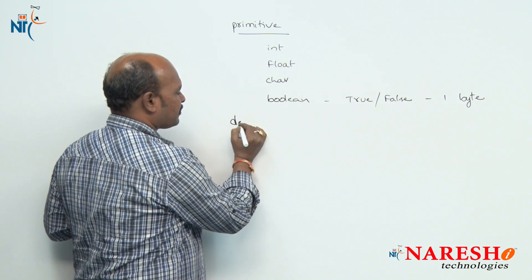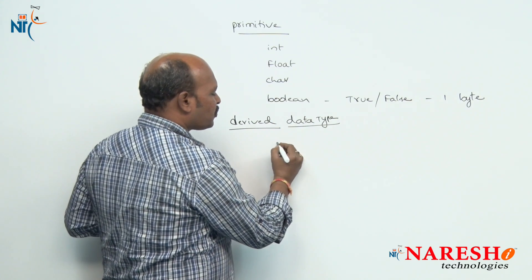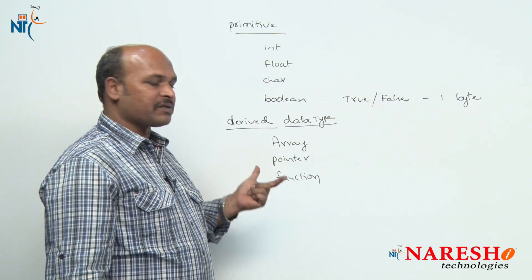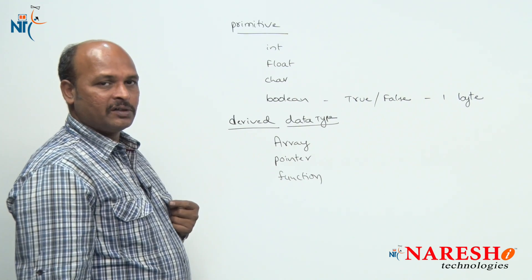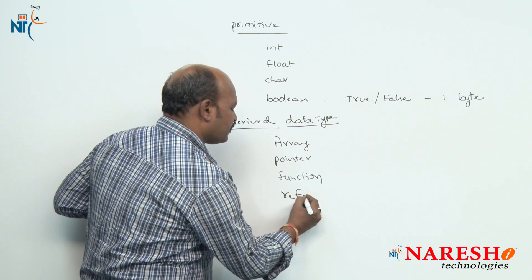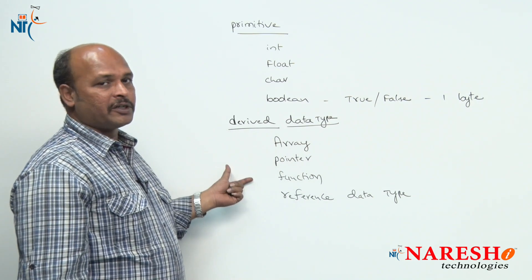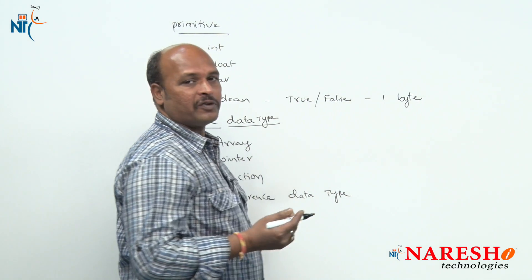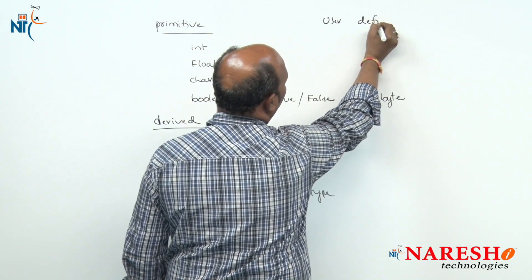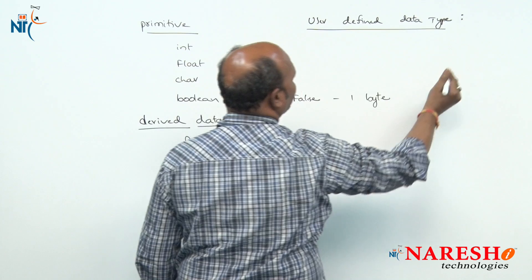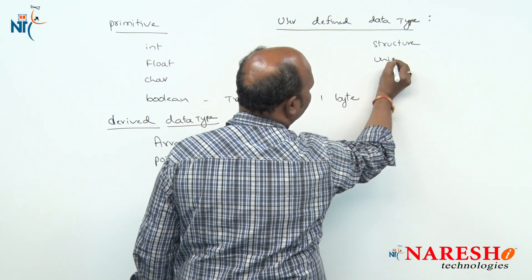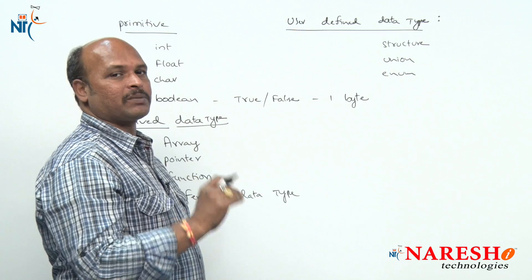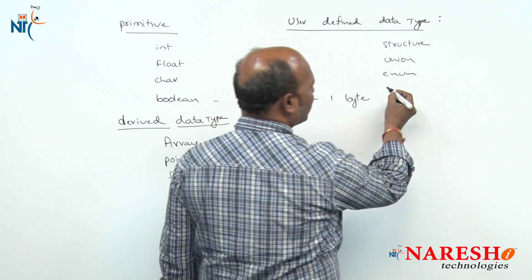Under derived data types, as usual we have arrays, pointers, and functions — and in C++ one more new addition is the reference data type, which is the new derived data type introduced in C++. Under user-defined data types, in C language we use structure, union, and enum. In C++, along with these, one more concept called class is introduced.